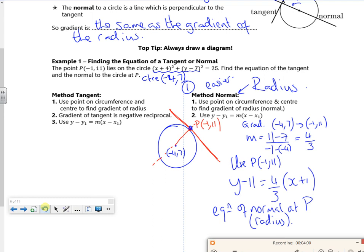Right then. So for the tangent, that is perpendicular to the radius. So I know from the normal, which I did first, I know that the gradient of the radius was (11 - 7) over (-1 - (-4)). So it's 4/3.